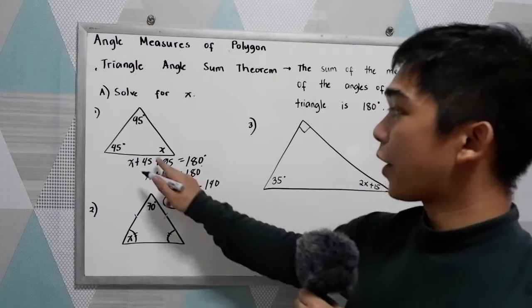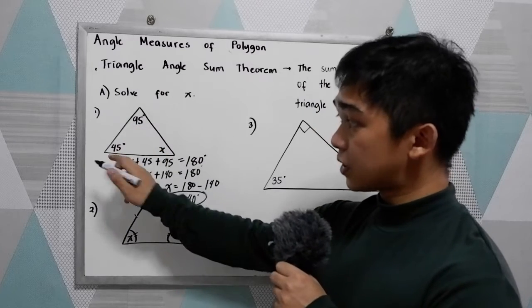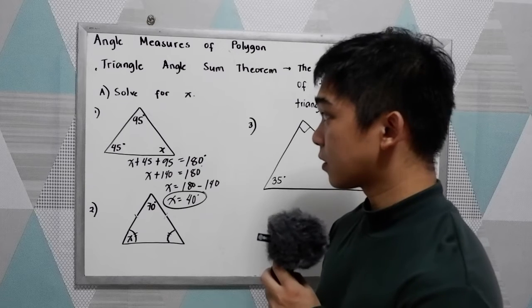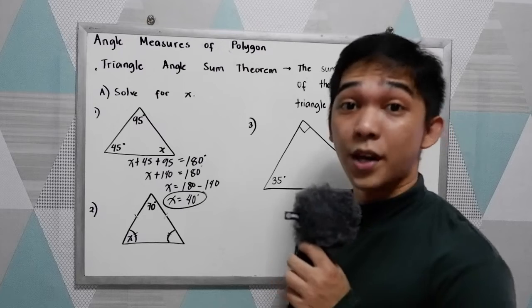So our x here is 40. If you want to check, 95 plus 45, that is 140. Plus 40, 180.